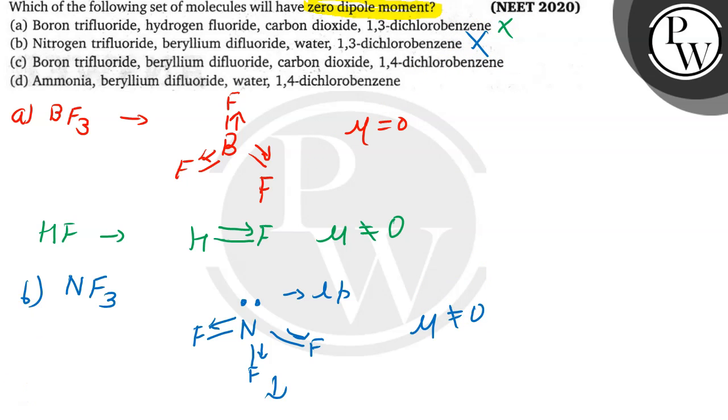Let's see option C, that is boron trifluoride. We have already taken out its dipole moment is zero, means till here it is correct. Next we have beryllium difluoride.